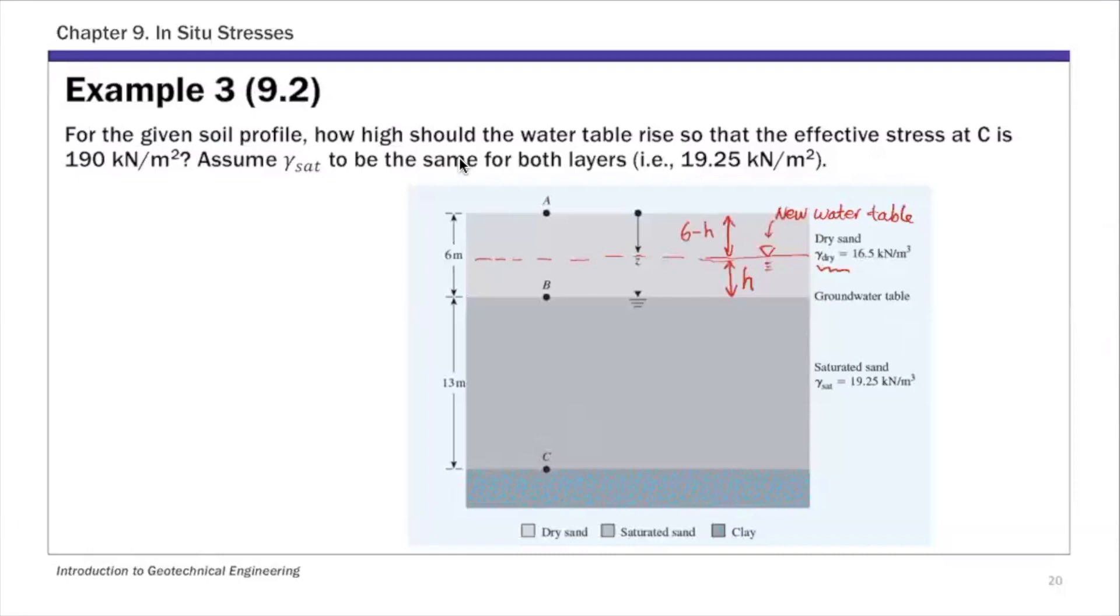The dry soil layer is 6 minus H. So at point C, sigma C prime, I'm going to use point in the unit weight as it is faster to do the calculation. So we have 6 minus H of gamma D.